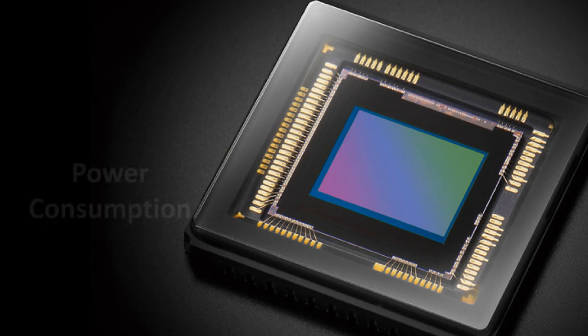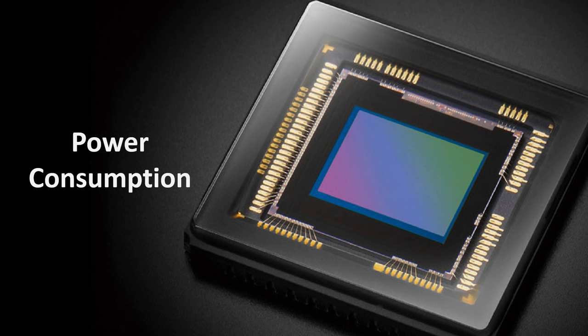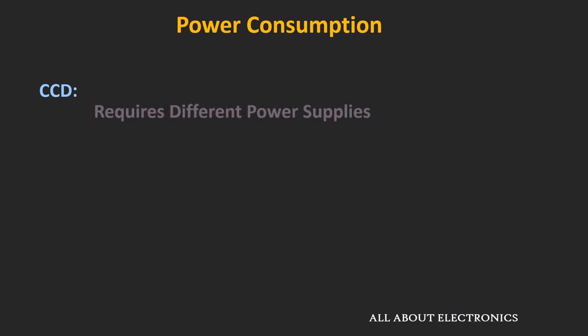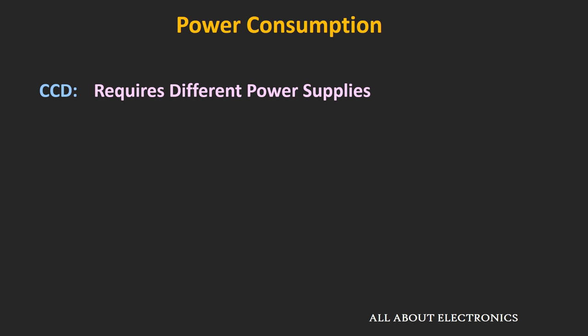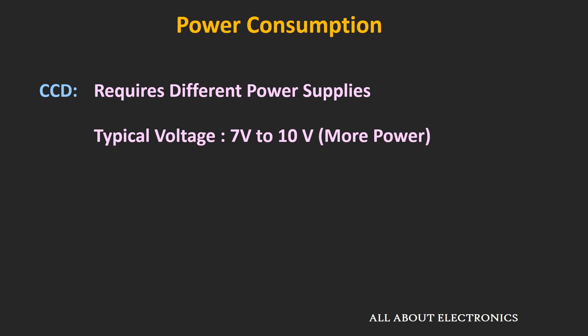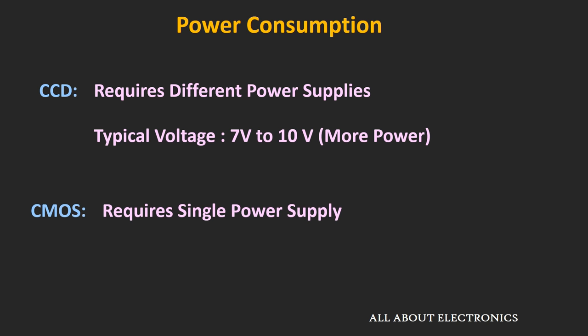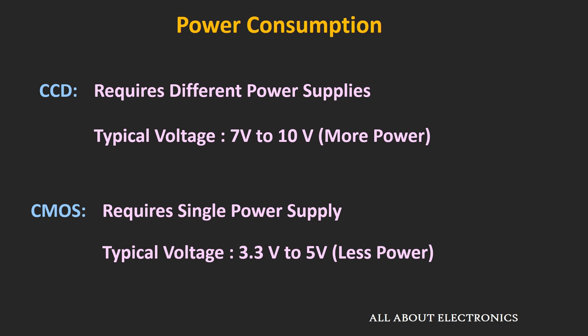Now let's compare these two sensors in terms of power consumption. In the case of the CCD sensor, we require different types of power supplies for the different timing clocks. Not only that, the typical voltage required for CCD is in the range of 7 to 10V, so the overall power consumption of the CCD sensor will be high. While in the case of the CMOS sensor, it requires a single power supply, and the typical voltage required is relatively low, that is 3.3V to 5V. Overall, power consumption of the CMOS sensor will be lesser compared to CCD sensors. So in applications where power consumption is the main criteria, the CMOS sensor is preferred over CCD sensors.